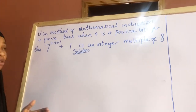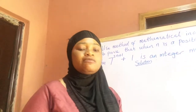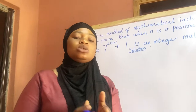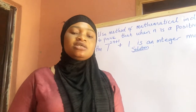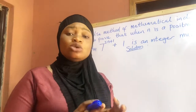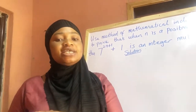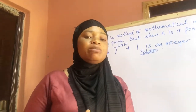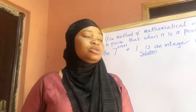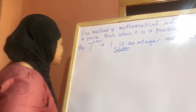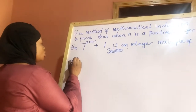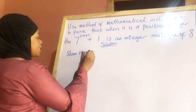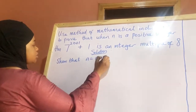In mathematical induction, you have to go through two steps. First, you show that n equals 1 is true. Then you assume that n equals k is true, and if n equals k is true, then n equals k plus 1 is also true.